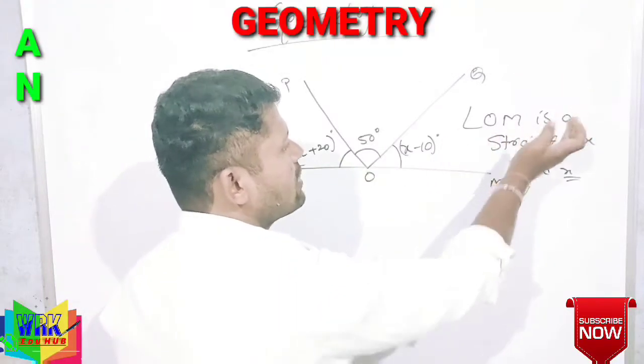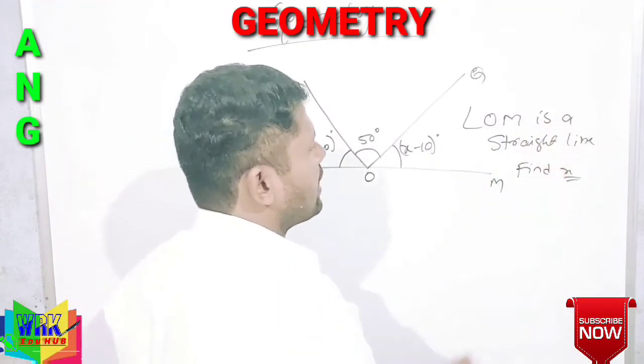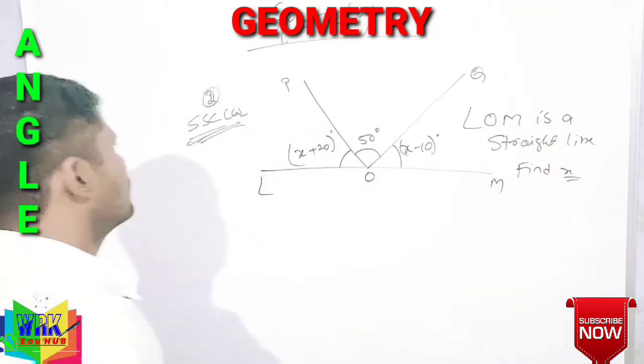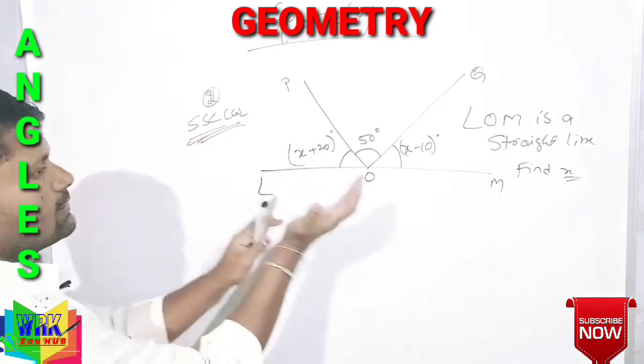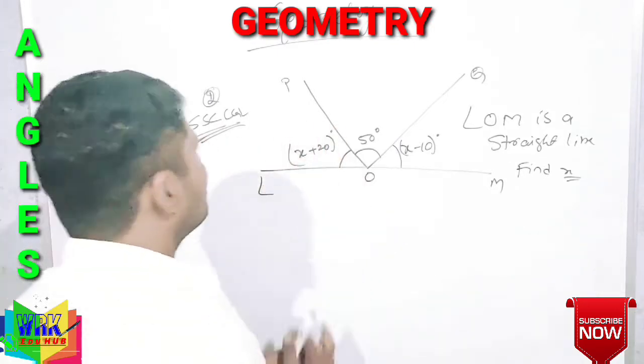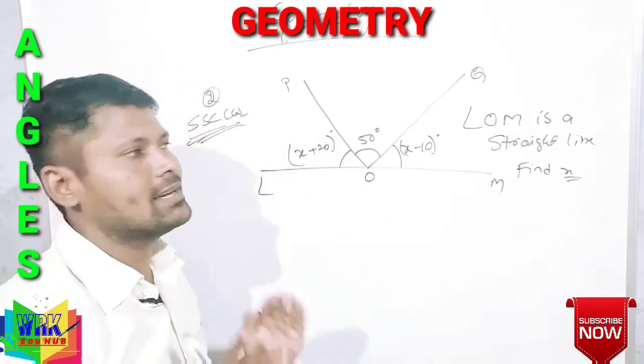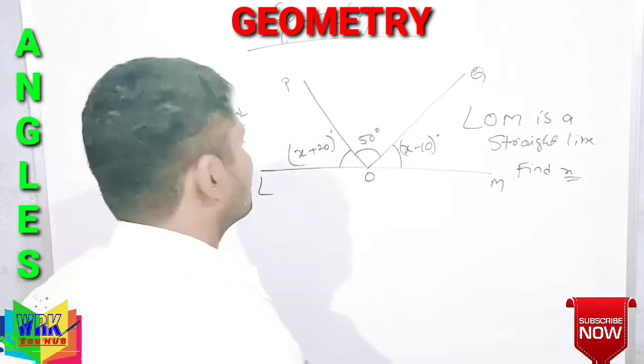The problem they have given: LOM is a straight line, find the X value. This is an SSC CGL previous question.